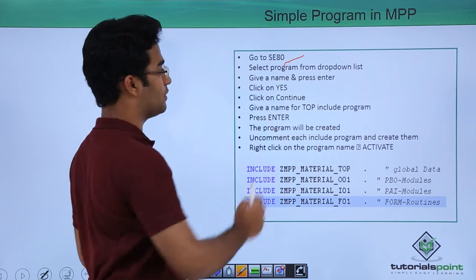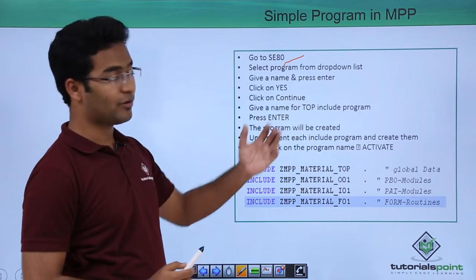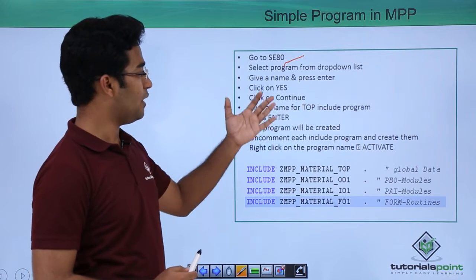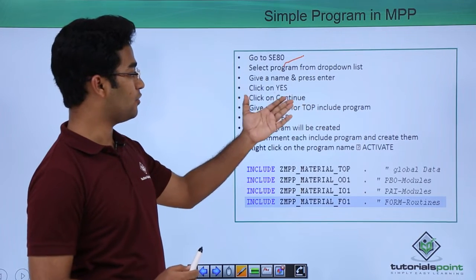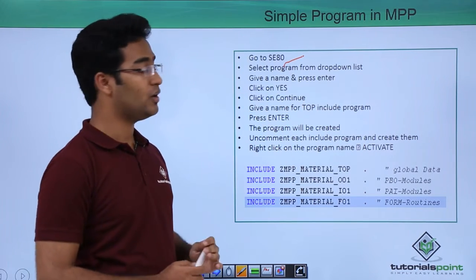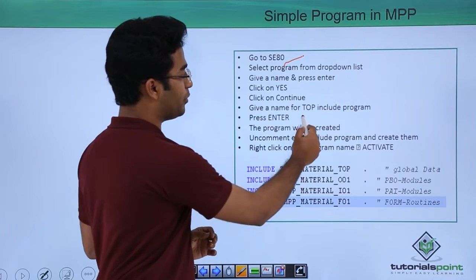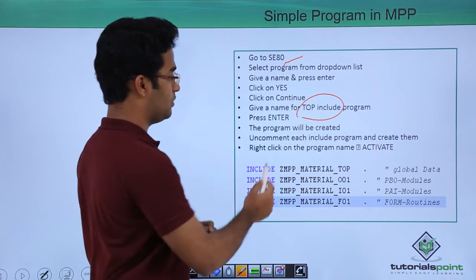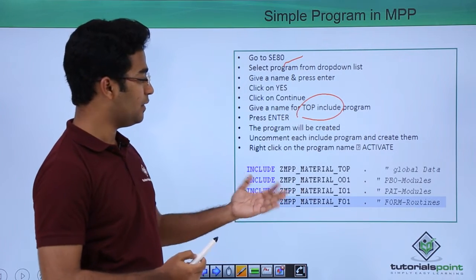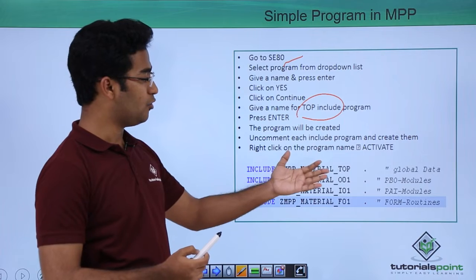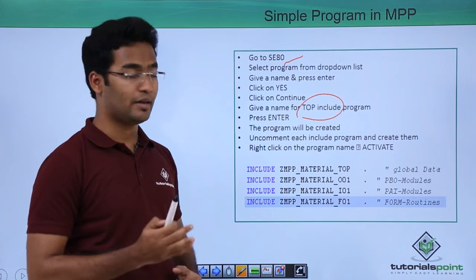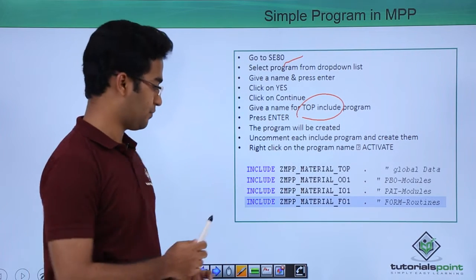This is the transaction code. Select the program from the drop-down list, give a name and press Enter, click on yes and continue. Then we will give a name for our top include program, then press Enter. The program will be created. Uncomment each include program and create them, then right-click on the program name and activate it.